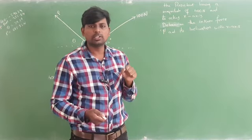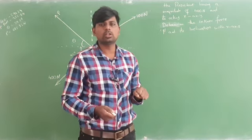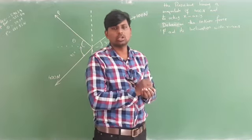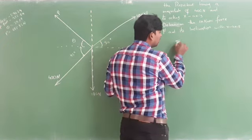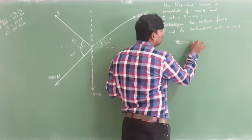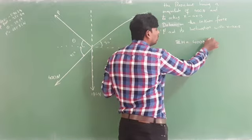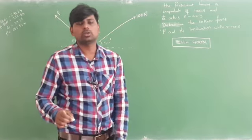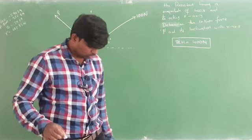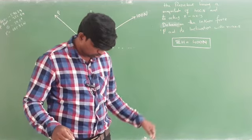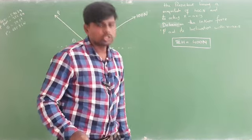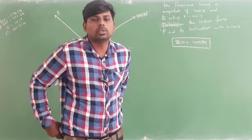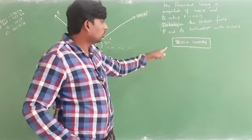The next step is to identify whether the resultant belongs to horizontal or vertical. Reading the question completely, it is acting on the x-axis, which means the sum of horizontal forces is equal to 400 Newton. This is given in the question.